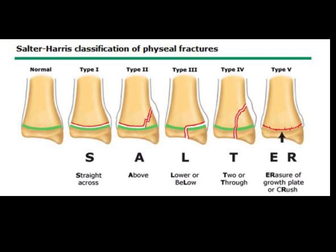We want to talk about fractures through the growth plate and how it involves the rest of the bone. Type 1 is just a fracture through the growth plate. Type 2 Salter-Harris fracture is through the growth plate and into the metaphysis. Type 3 extends from the metaphysis into the epiphysis. Type 4 involves both the metaphysis and the epiphysis. And type 5 is a crush injury where we have actual loss of the growth plate.